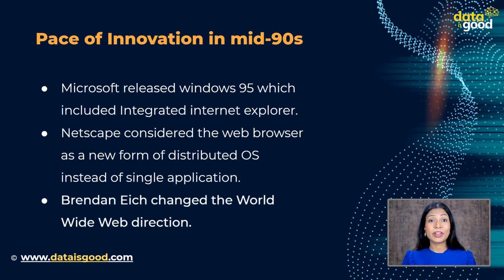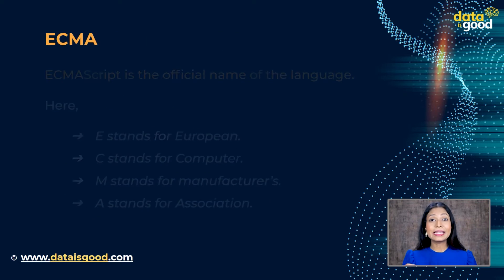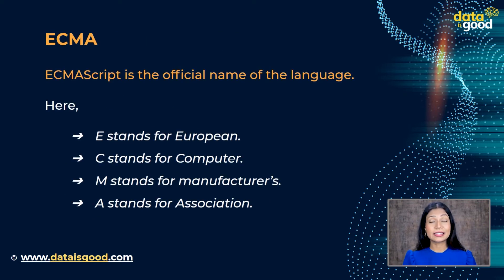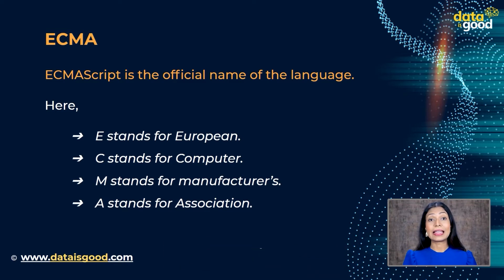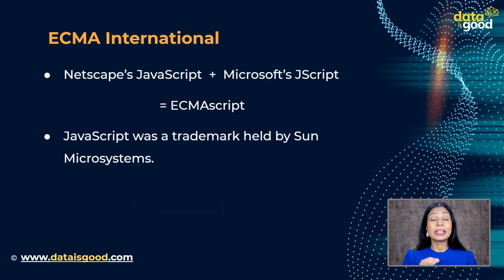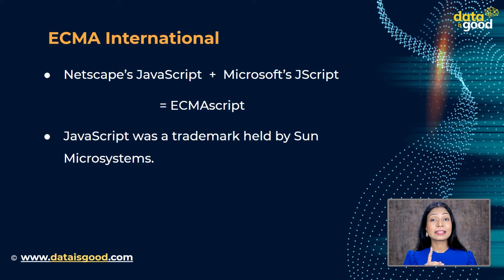JavaScript turned out to be adaptable, and Brendan Eich changed the World Wide Web's direction forever in those 10 days. ECMAScript is the official name of the language — E stands for European, C for Computer, M for Manufacturers, and A for Association. ECMA International is a company that standardizes information and communication systems. They took Netscape's JavaScript and Microsoft's JavaScript to create a standardization called ECMAScript, a language specification that both languages are based upon.